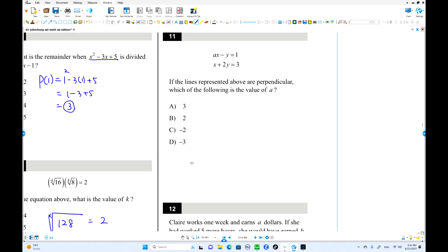Number 11. Perpendicular. Slope of this one. I'm going to do this. y equals ax minus 1. This is the slope of the line. The other one is y equals negative 1 over 2 x plus 3 over 2. This is the other slope. To be perpendicular, it's going to be negative reciprocal. What is the negative reciprocal of this one? Positive 2. That is equal to A.